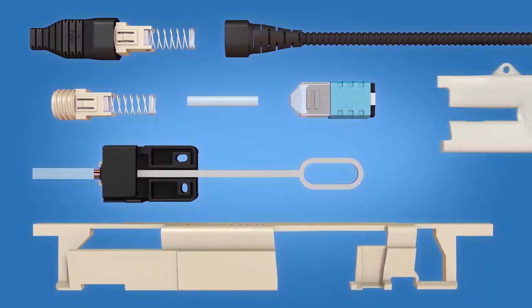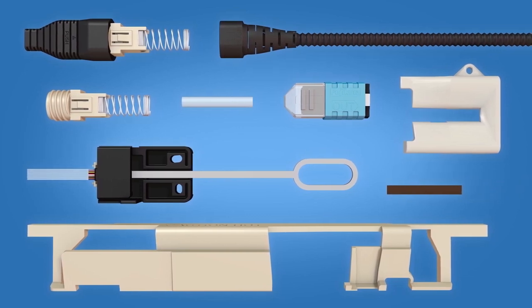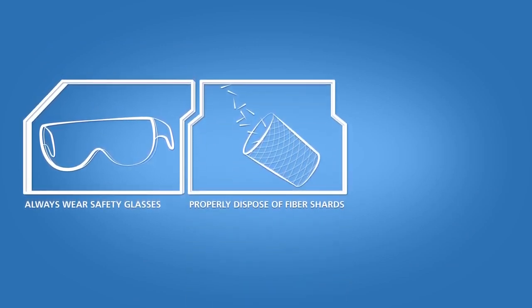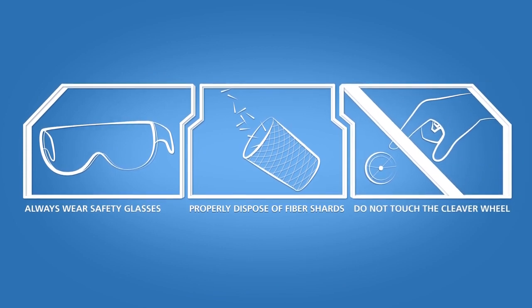The kit also includes a heater attachment, a ribbonizing tape jig, and ribbonizing tape. Always wear eye protection when handling optical fibers. Dispose of any cut or cleaved ends properly. Do not touch the cleaver wheel with bare hands.